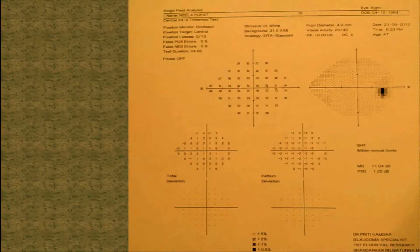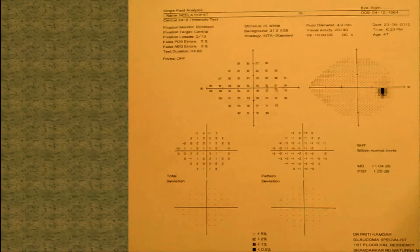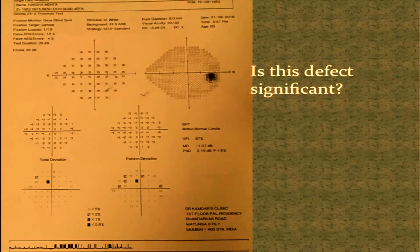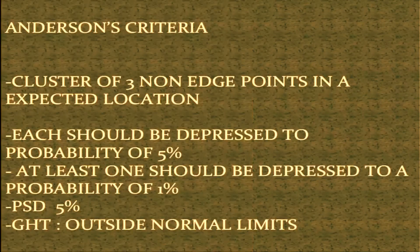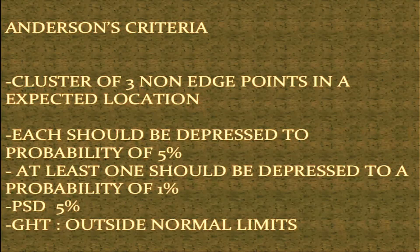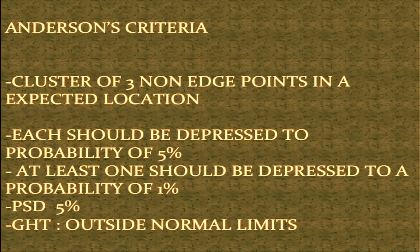Now we come to the second question: is it normal or is it abnormal? I have confirmed it is reliable. Total deviation is normal, pattern deviation is normal — I am convinced it is a normal field. But sometimes we see fields which show very stray and not very deep scotomas. Is this defect significant? For that, we have Anderson's criteria, which cover all these three parameters. It is just a guideline, not mandatory. With clinical correlation, even if it doesn't fulfill all criteria, the field may still give you some information.